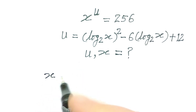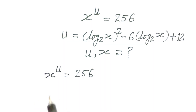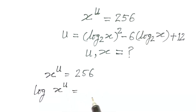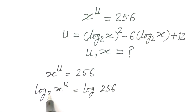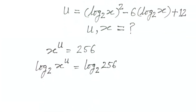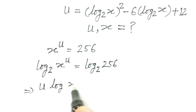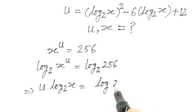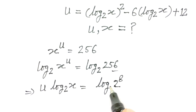As we have given x to the power u is equal to 256, taking log on both sides with base 2: log of x to the power u is equal to log of 256. Now 256 can be written as 2 to the power 8, so log base 2 of 2 to the power 8.